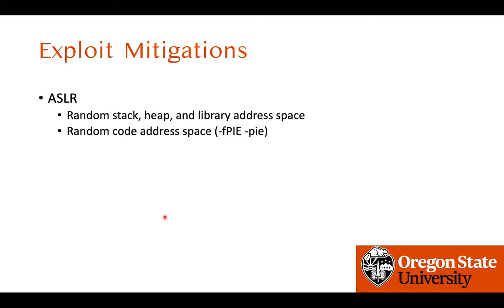Next is ASLR. We know that ASLR without PIE is essentially useless — without PIE, we can leak from GOT and override GOT directly. With PIE, we know how to break it too, but it requires at least one additional step of leaking an address. Good practice is to always enable full ASLR by adding `-fPIE` and `-pie` to your compiler options, which compiles the binary as a position-independent executable. If the system supports ASLR, the binary will be fully randomized.